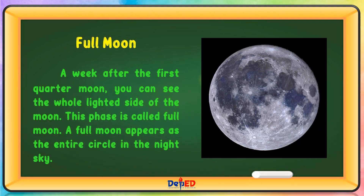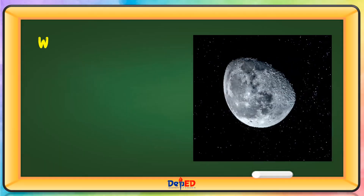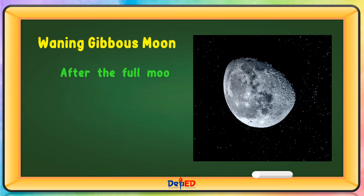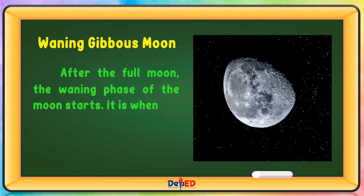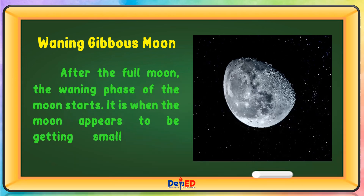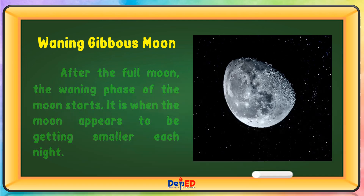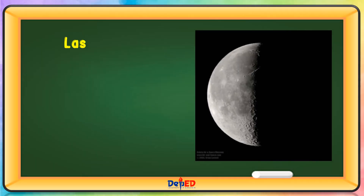Waning Gibbous Moon — After the full moon, the waning phase of the Moon starts. It is when the Moon appears to be getting smaller each night.